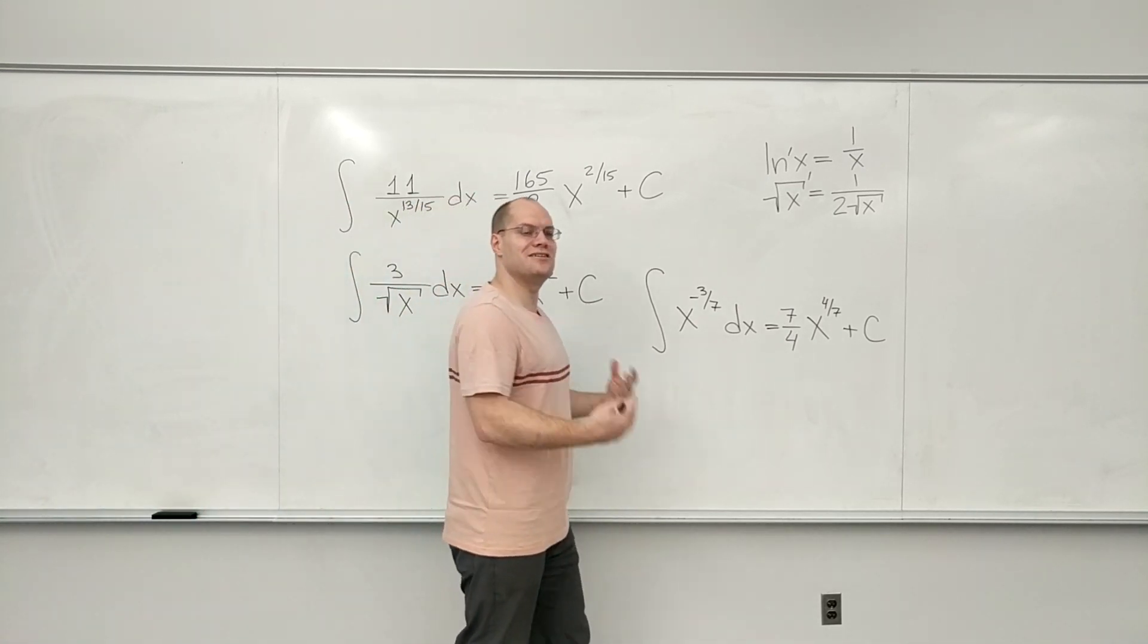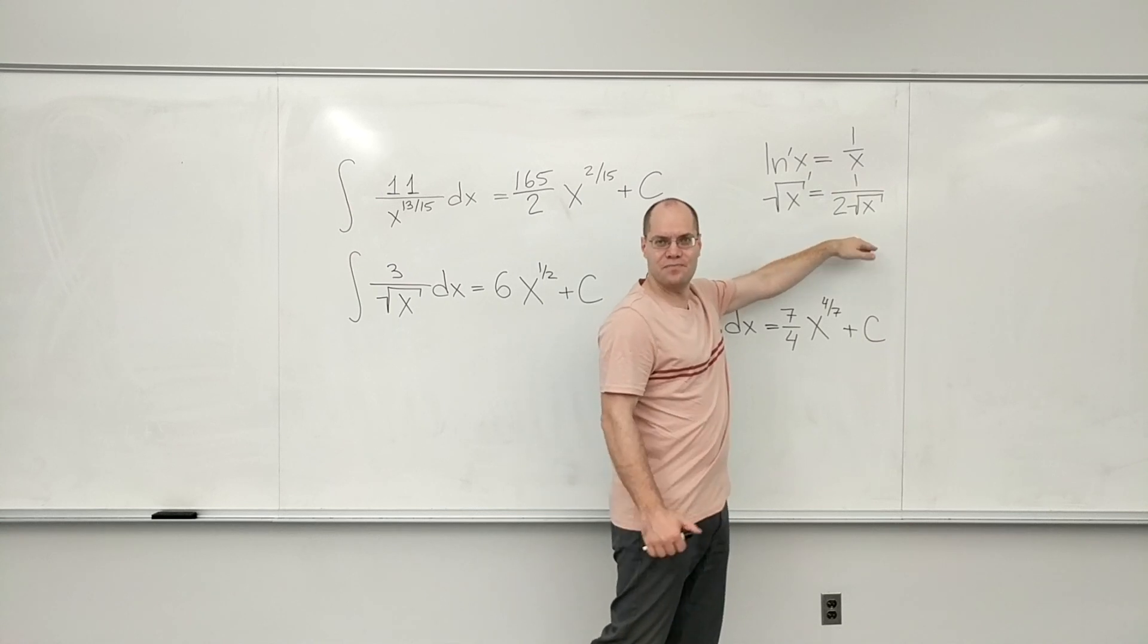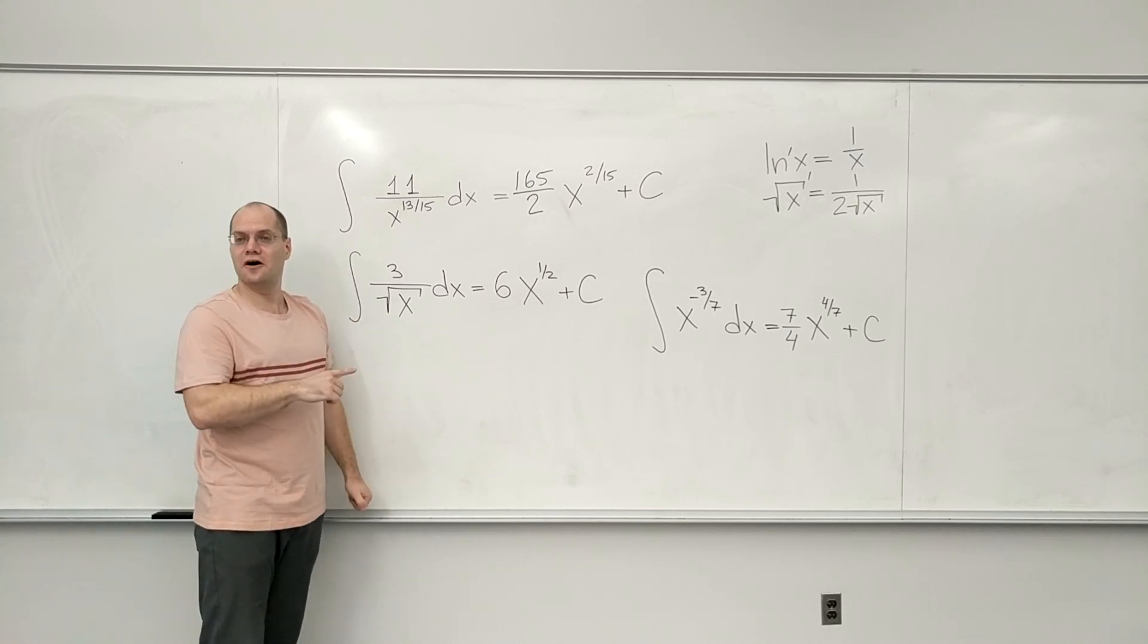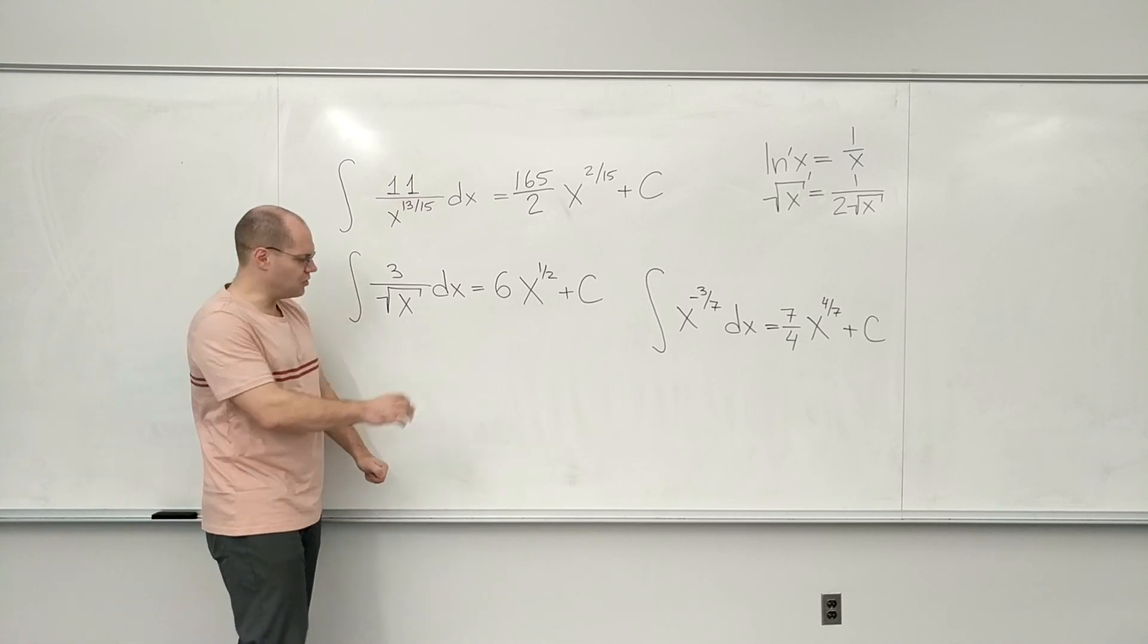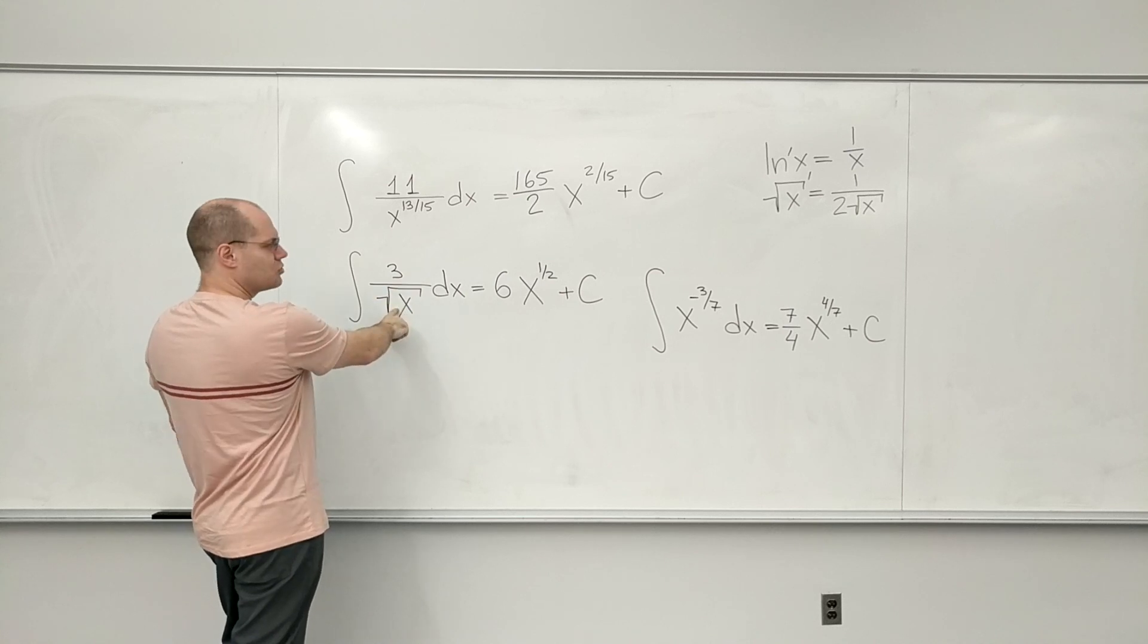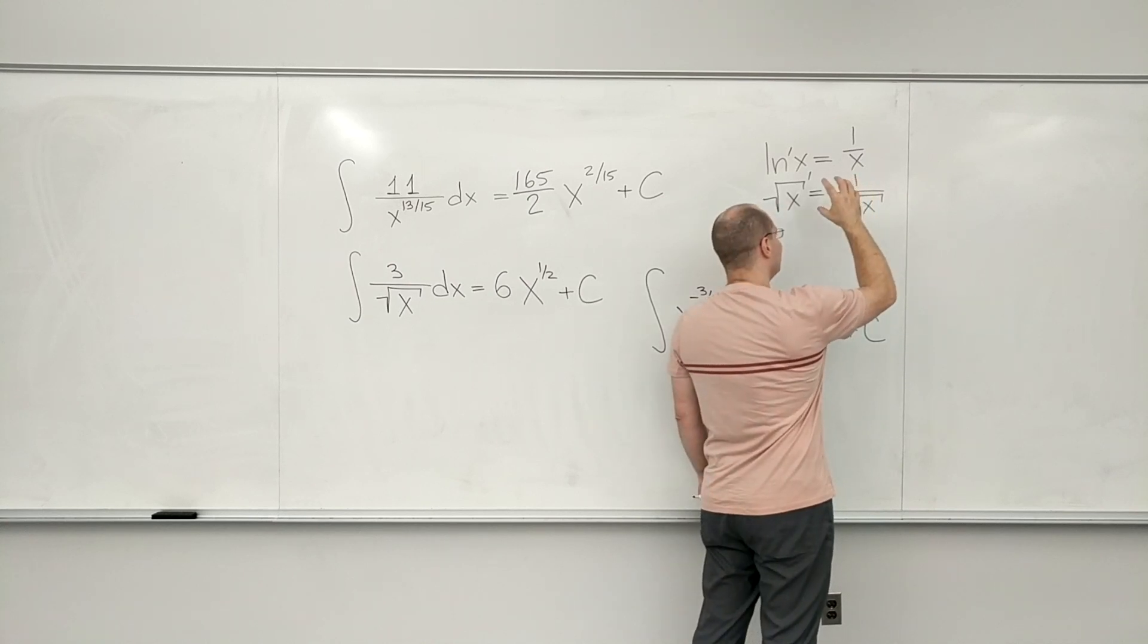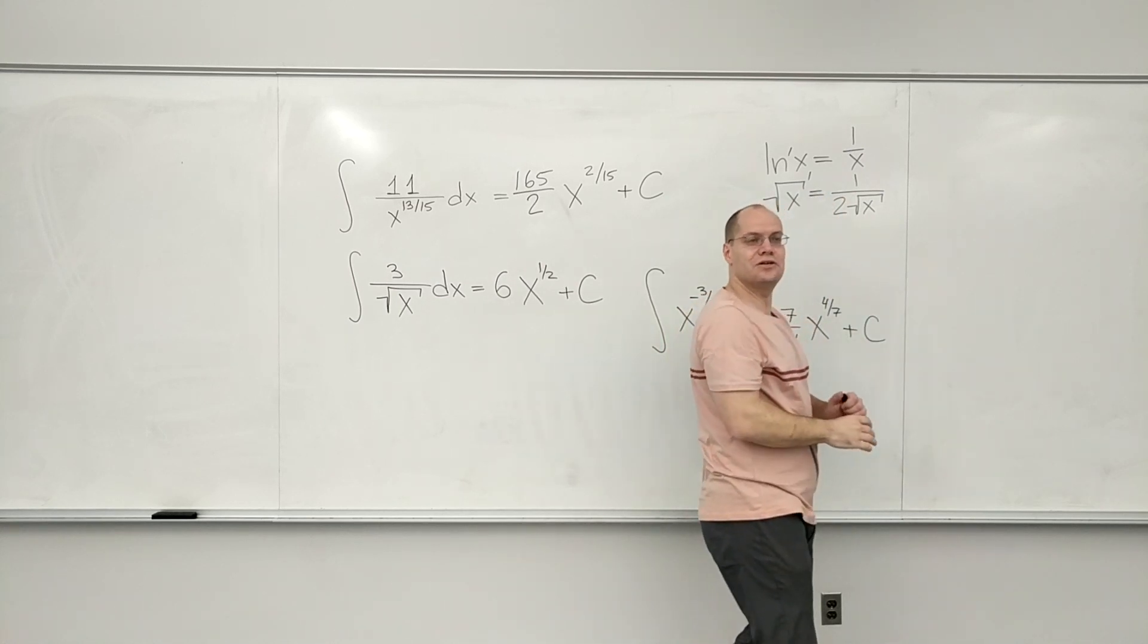But it's a special enough special case that I remember it outright. And when I see one over square root of x, I recognize it as having come from the square root of x. You guys are with me on that? So my eye sees this and immediately thinks this came from the square root of x, because that's what the derivative does to the square root of x. It puts it on the bottom.